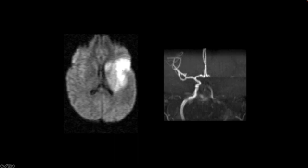So here's an MRI diffusion sequence that shows restricted diffusion in the geographic area involving that MCA vascular distribution. And here's an image from the MRA that shows that the middle cerebral artery on the left side shows no flow-related enhancement, where the right side looks normal.